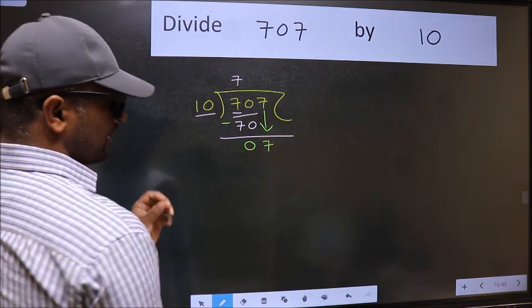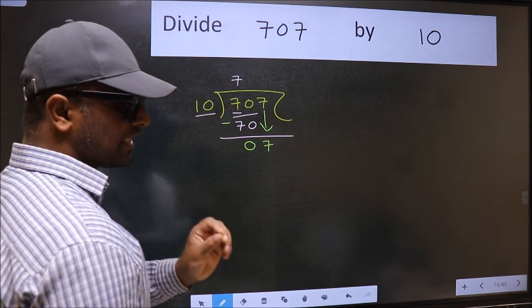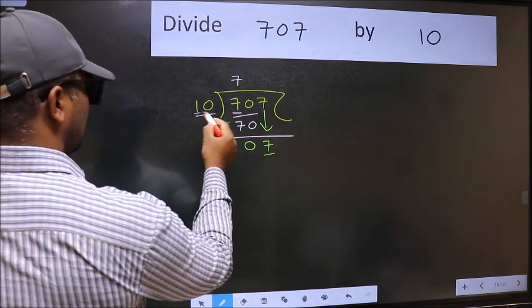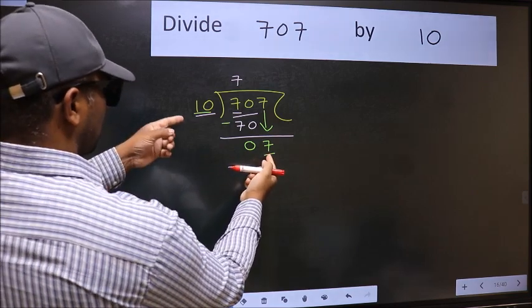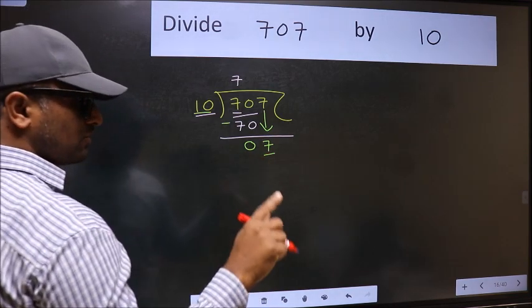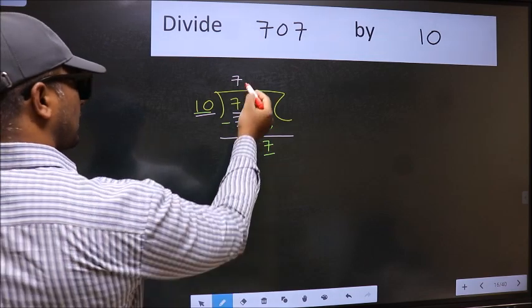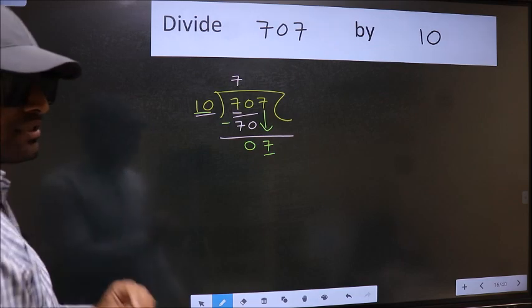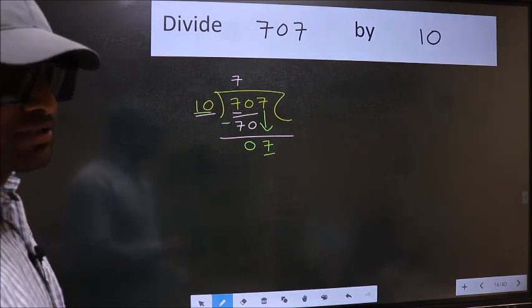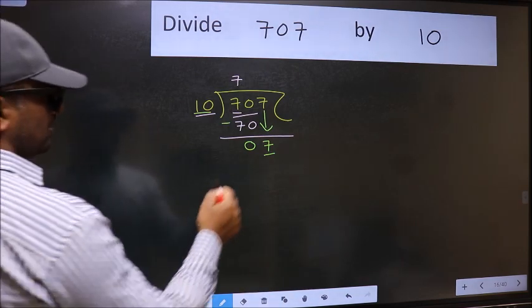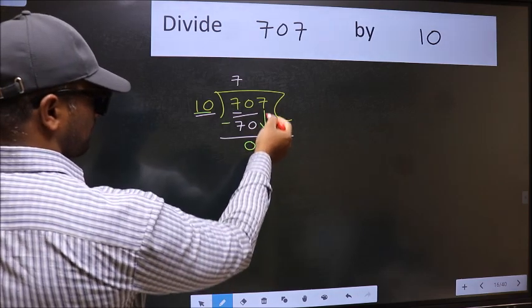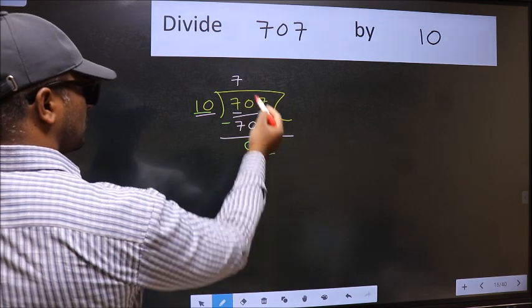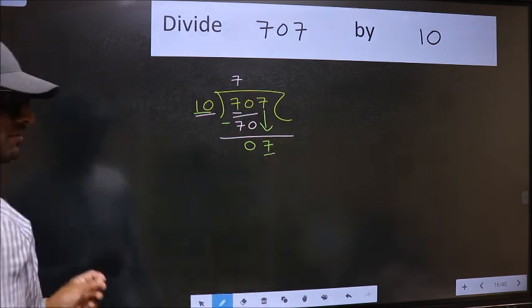After this step, the mistake happens. And the mistake is this: here we have 7 and here 10. 7 is smaller than 10. So what many do is they directly put dot, take 0, which is wrong. Why is it wrong? Because just now you brought this number down, and in the same step you want to put dot, take 0, which is wrong.